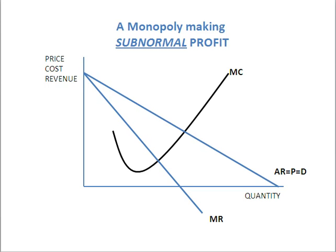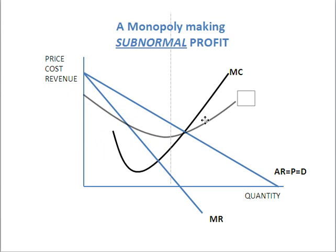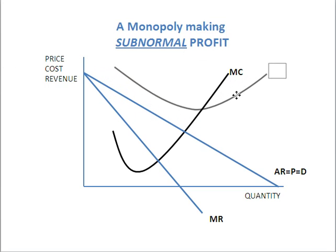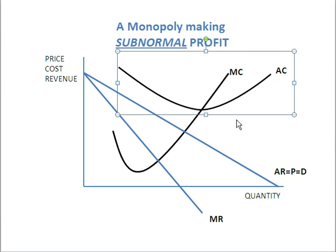Let's now look at a monopoly making a subnormal profit. The first step, once again, is that we have to pick up our average cost curve and place it on the diagram. Remember that the key thing is the average cost curve must cut that marginal cost curve at its minimum point.